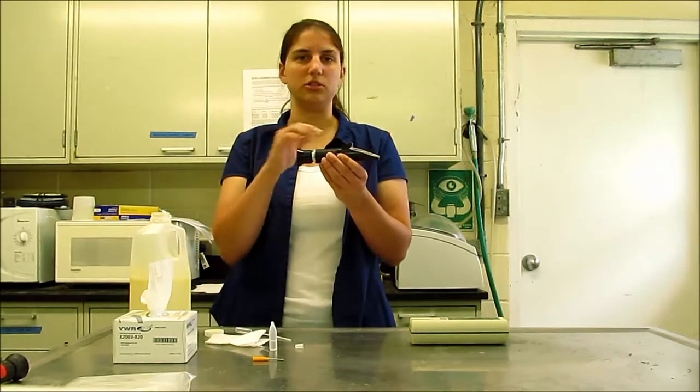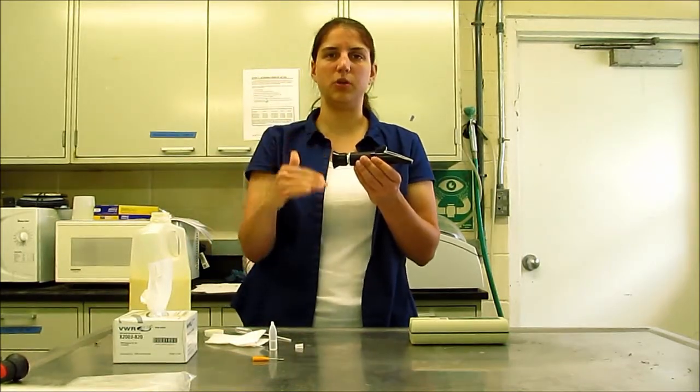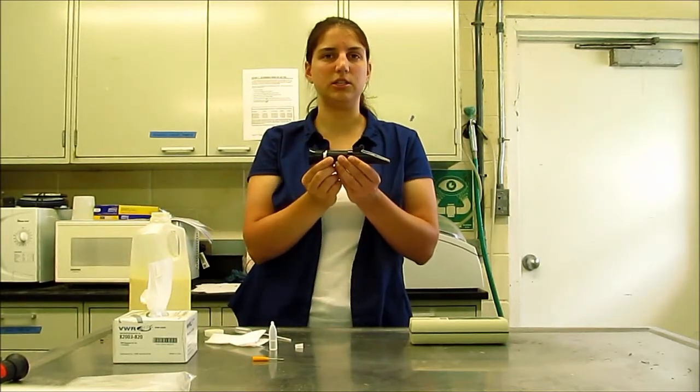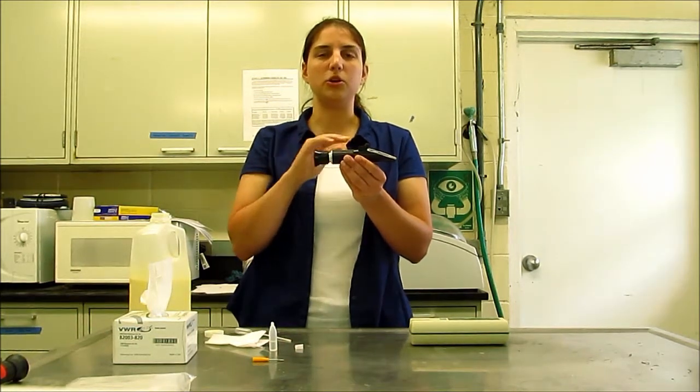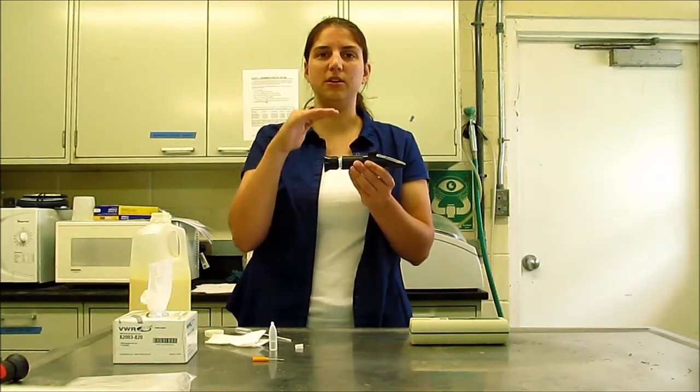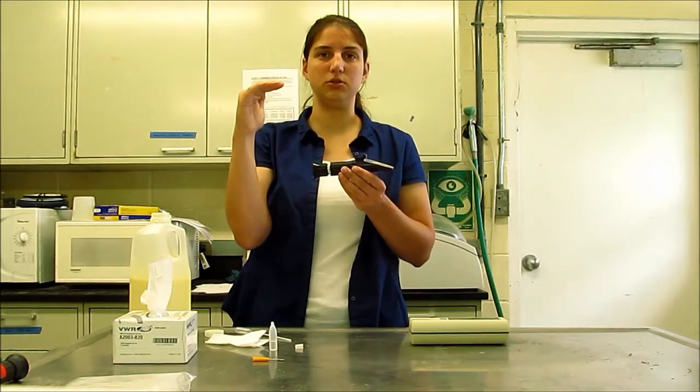Once again, you're going to look through the eyepiece, look for the interface between the blue and the white. With colostrum, it generally is not a very clear line. It'll be somewhat fuzzy. But what you're looking for is for that interface to be above 22, and the units on a refractometer is going to be in percent Brix.